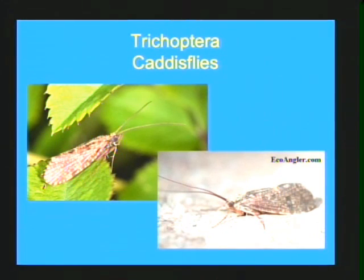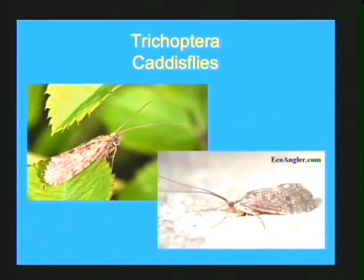Adult caddisflies look very similar to butterflies and moths, and most people do mistake them for such — rightly so, as they are closely related cousins. Trichoptera means 'hairy winged': under a microscope their wings are covered with very fine small hairs. They hold their wings like a tent or frame over their abdomen and always have very long antennae, so the adults of the Trichoptera should be very easy to recognize.